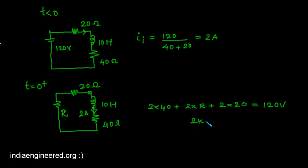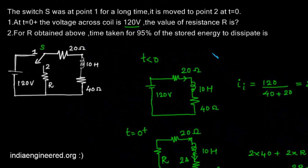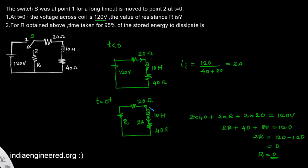From KVL: 2R plus 80 plus 40 equals 120, so 2R equals 120 minus 120, which is 0. Therefore R equals 0 ohms. To summarize: the initial inductor current was 2 amperes; at t equal to 0 plus current cannot change abruptly, so 2 amperes flows through the 10 henry inductor, creating a potential drop of 2 into (40 + R + 20). Equating to 120 volts gives R equal to 0.